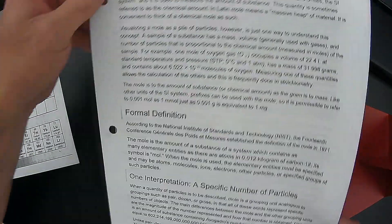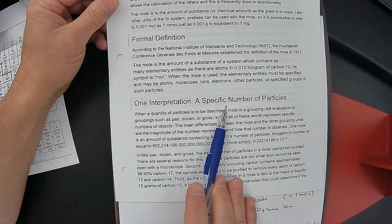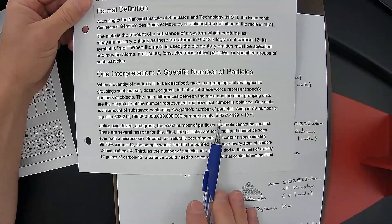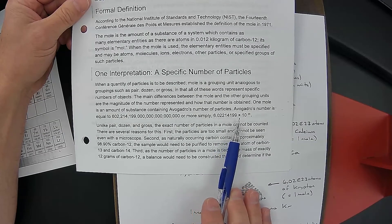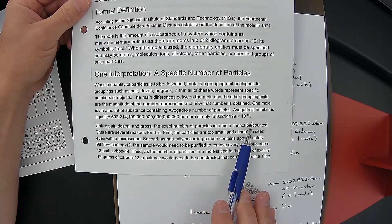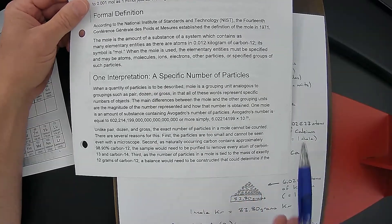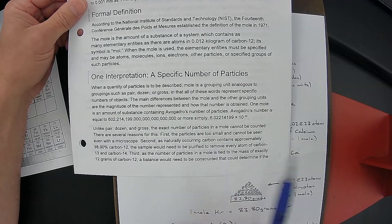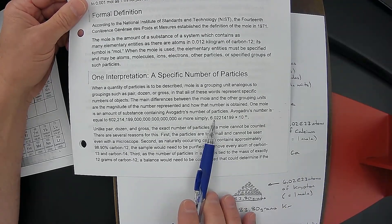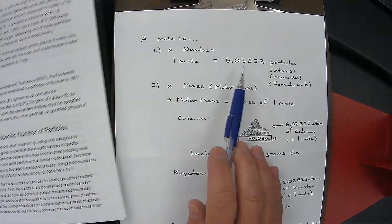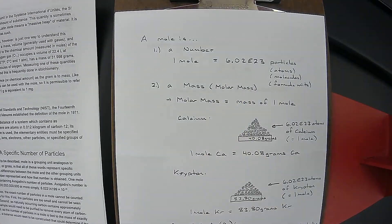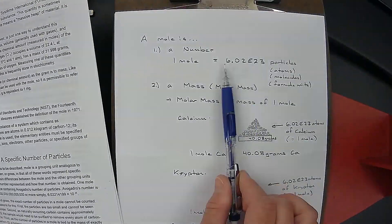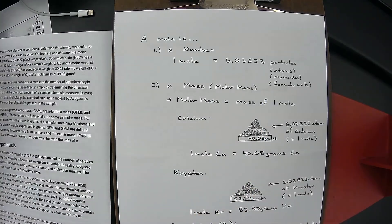A mole is a specific number of particles — exactly 6.02214199 × 10²³. We talked about how that's similar to pi, which is really 3.14159 and keeps going forever, but we write it as 3.14. Same thing here — it has a lot of digits, but we round it to 6.02. So the first interpretation is that a mole is just a number of particles, just like a pair is 2 and a dozen is 12.